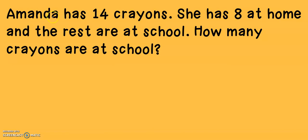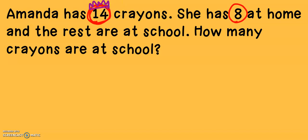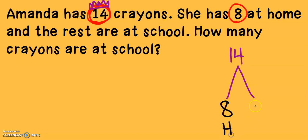Let's take a look at the next problem. Amanda has 14 crayons. She has 8 at home, and the rest are at school. How many crayons are at school? I know that Amanda has 14 crayons — that is her total number of crayons. So I know I can't have more crayons at school than 14 because that is my total. Since I know my total is 14, maybe I could make a math mountain for this problem. She has 8 at home and the rest are at school. I can even put an H for home and an S for school. Now I need to find this missing number, and I'm going to use my counting down strategy.